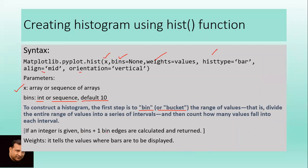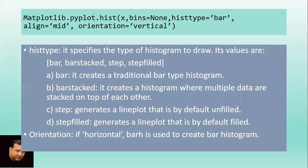If an integer is given for bins, then bins plus one bin edges are calculated and returned. Weights tell the values where bars are to be displayed. It will be clearer after seeing some examples.